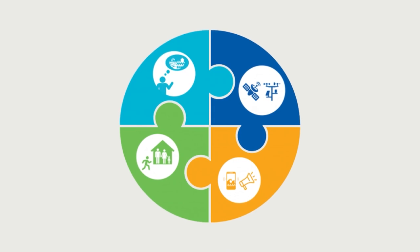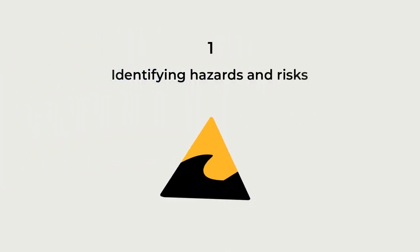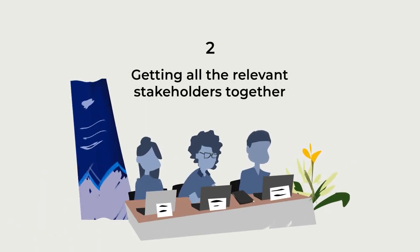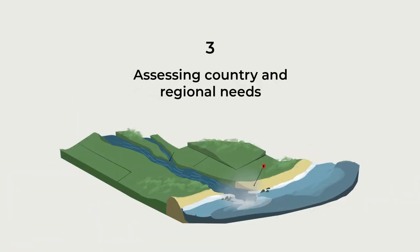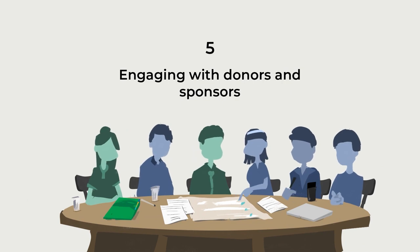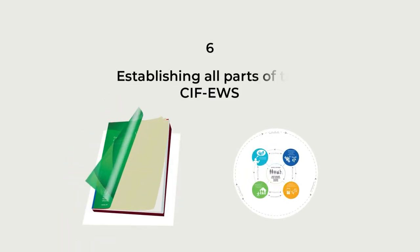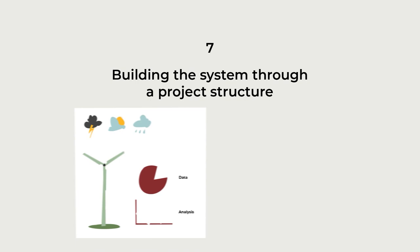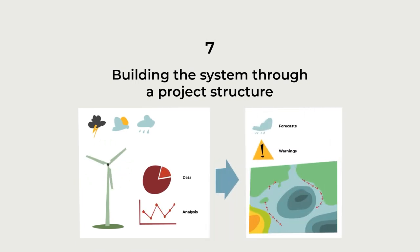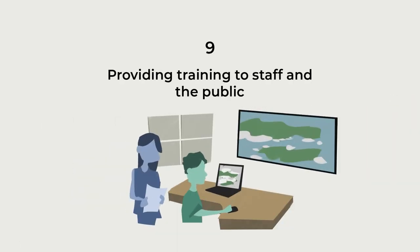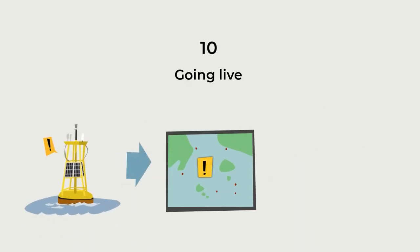Broadly speaking, the 10 steps include: 1. Identifying hazards and risks. 2. Getting all the relevant stakeholders together. 3. Assessing country and regional needs. 4. Developing effective communication systems to the last mile. 5. Engaging with donors and sponsors. 6. Establishing all parts of the early warning system. 7. Building the system through a project structure. 8. Testing the system. 9. Providing training to staff and the public. 10. Going live.